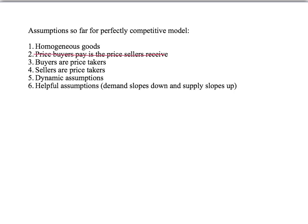Our third and fourth assumptions are our price-taking assumptions. Given the price, buyers decide how much they would like to buy. Given the price, sellers decide how much they would like to sell. These lead on to our dynamic assumptions. If the amount buyers would like to buy exceeds what sellers would like to sell, we have excess demand and the price will rise. If sellers wish to sell more than buyers wish to buy, we have excess supply and the price falls. Finally, our helpful assumptions: demand slopes down, supply slopes up — but as we've seen, they're not necessary, just convenient.